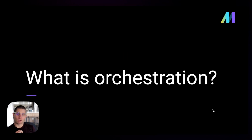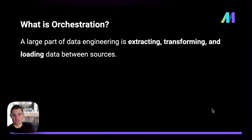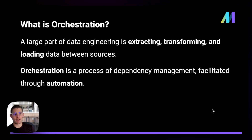First, let's take a step back and talk about what orchestration is. A large part of data engineering is extracting, transforming, and loading data between different sources. When I say orchestration, I'm defining that as a process of dependency management facilitated through automation. Automation is the key piece here — we're engineers, and the idea is to minimize manual work.